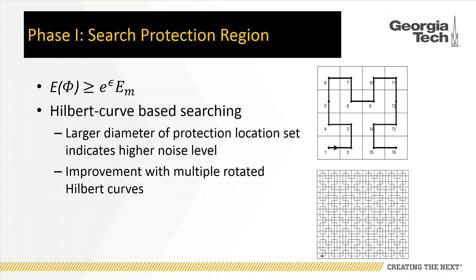To find this region, we propose a Hilbert curve-based search. The Hilbert curve transforms two-dimensional points into one dimension while preserving proximity. Based on the Hilbert curve-based search, we can find such a region efficiently. Notably, a larger diameter protection region indicates a higher noise level, so our algorithm aims to find a region with as small a diameter as possible, using techniques with multiple rotated Hilbert curves.